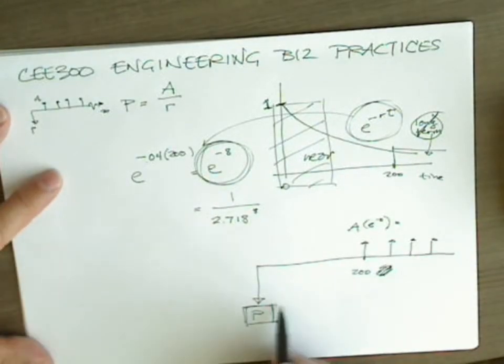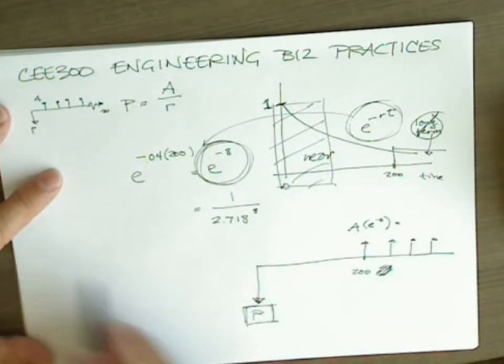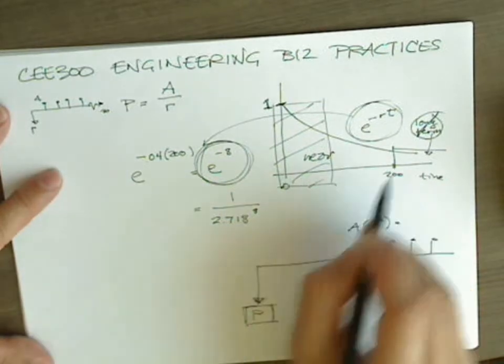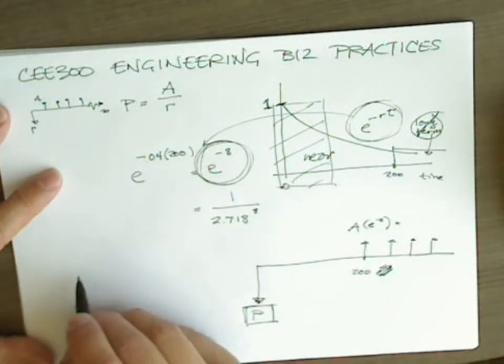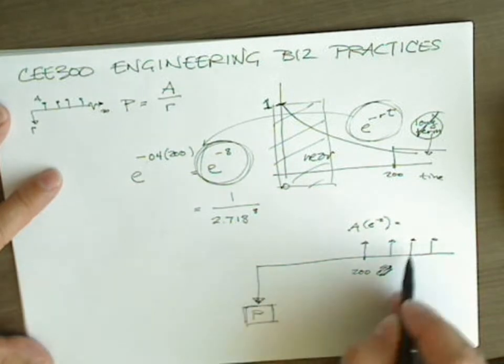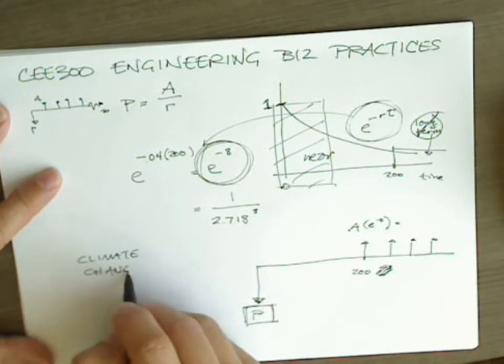But there are no bonds that we purchase now and begin to pay us 200 years later. So what kind of nonsense is this hypothetical cash flow diagram that I've shown you? For extremely long-term problems, especially those problems that are non-financial, sometimes we do get this type of relationship. One of those, for example, is climate change.